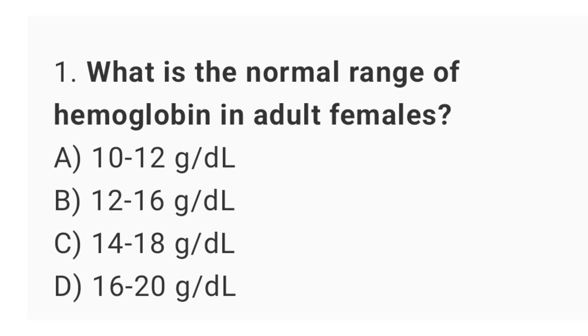Q1: What is the normal range of hemoglobin in adult females? The right answer is option B: 12 up to 16 grams per deciliter.